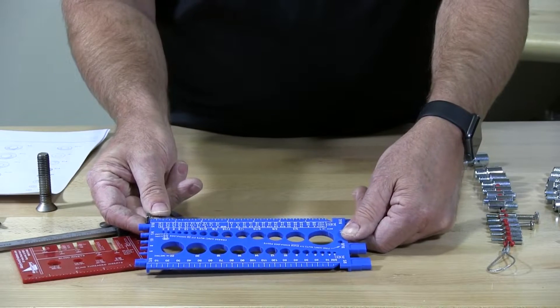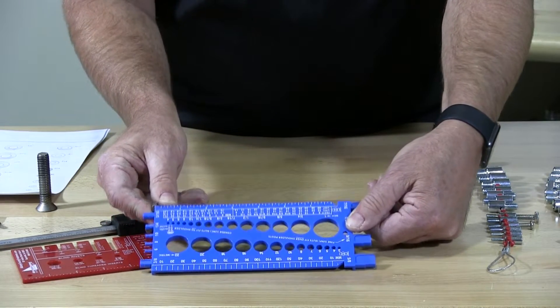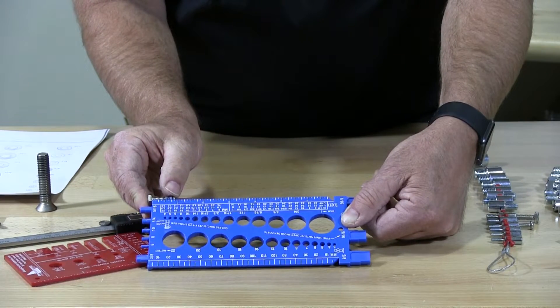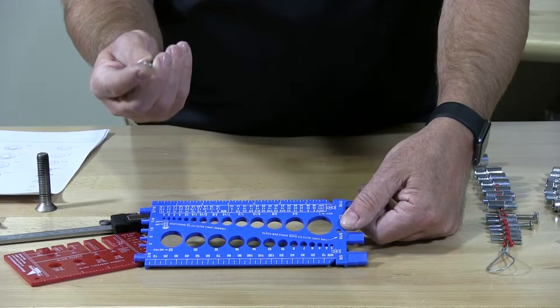So in this situation we would see that this is 7/8ths of an inch when all said and done. This is 1 inch and it's ⅛ less so we have 7/8ths of an inch. So we know it's ¼ inch by 7/8ths.